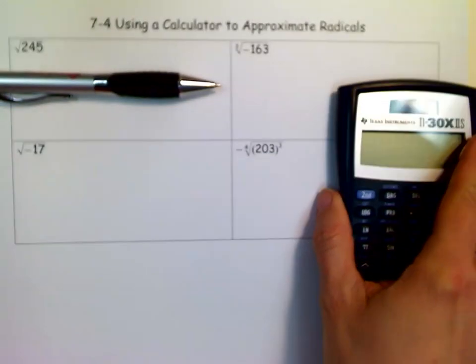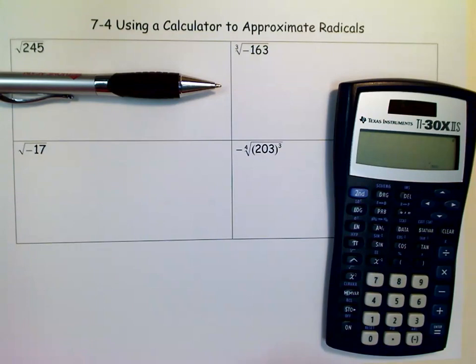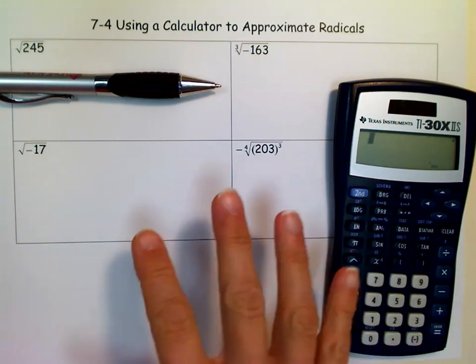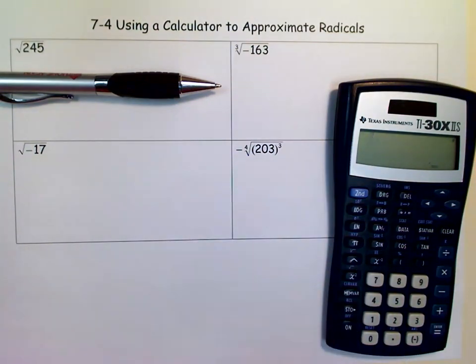Greetings, this is mSquared and we're going to use a calculator to approximate some radicals. You'll see square roots, a cube root, and a fourth root too.